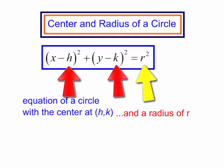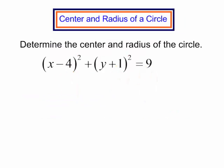Let's get started. Determine the center and radius of the circle. (x - 4)² + (y + 1)² = 9.